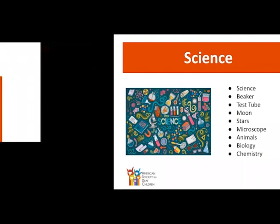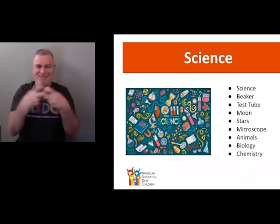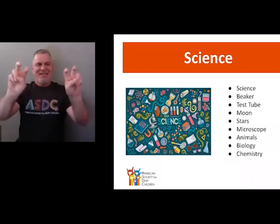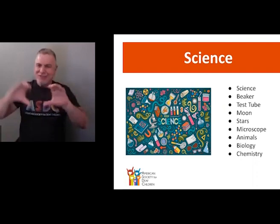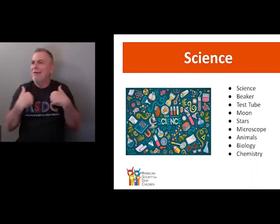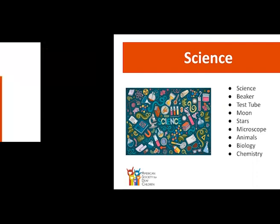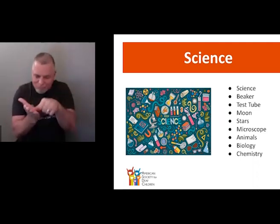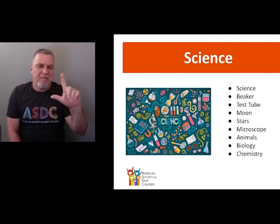Question: are other sciences just the same sign with the other initials — for example, is physics the science sign with a P? No — physics is actually different. It's a bent V — take your V's and bend them, then like this. Chemistry, physics. What about dissection in biology? If you're doing a dissection on an animal, it would be this. For a science lab, you would fingerspell lab.